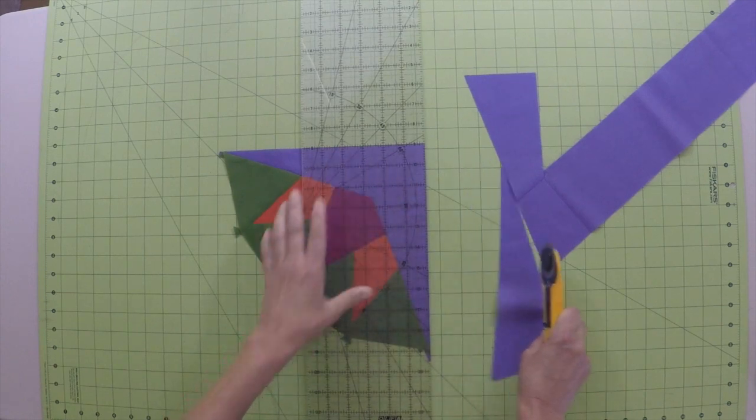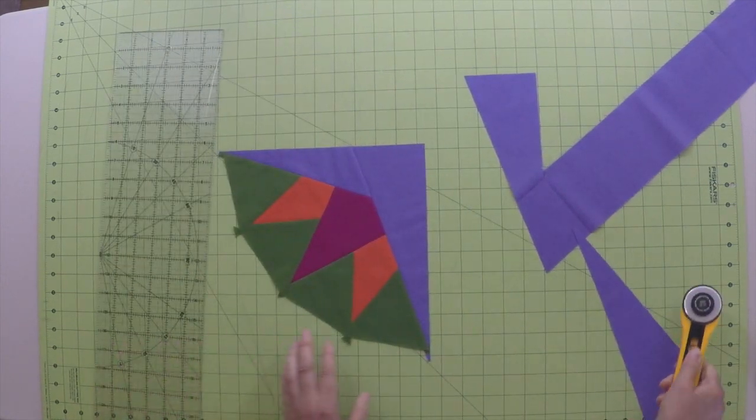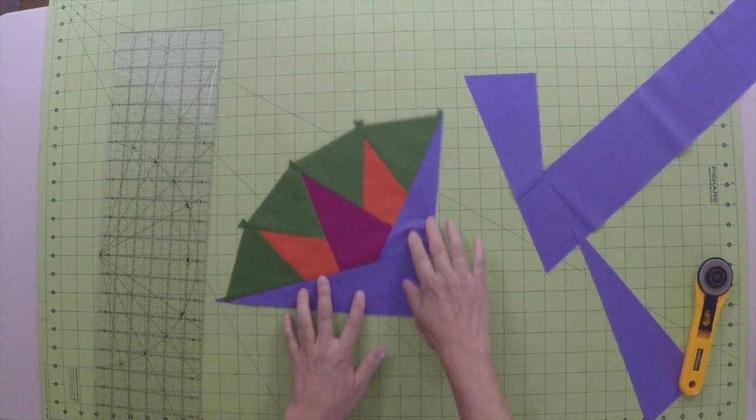Now you have a quarter compass unit ready to sew into your project. Make sure you use your pin markers as a guide so that your points will come out perfectly.